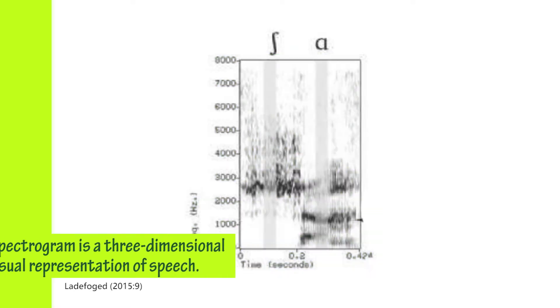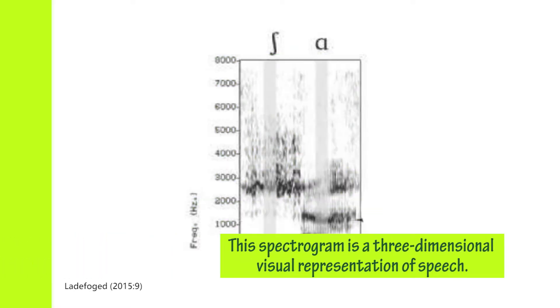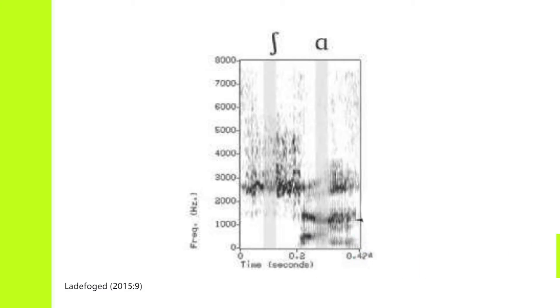the spectrogram. This is a three-dimensional visual representation of speech. Technically you could say it's two-dimensional, but the added dimension comes with the intensity of the information in the spectrogram. You see there are parts which are gray, some white, and some much darker—that is the third